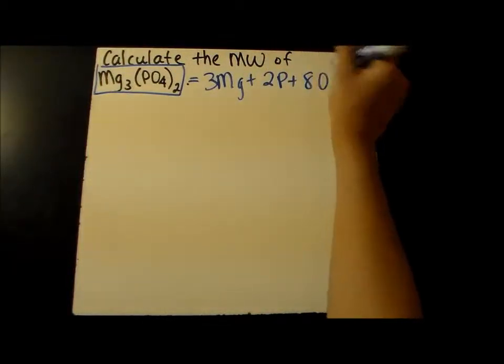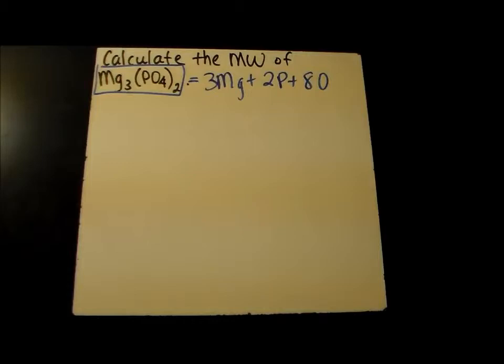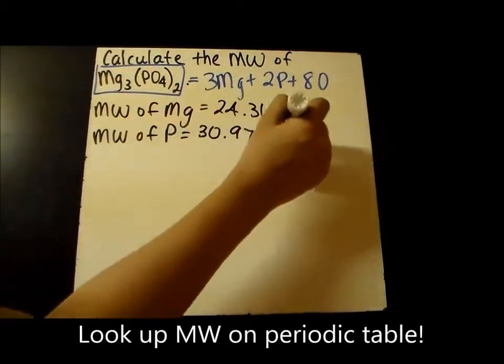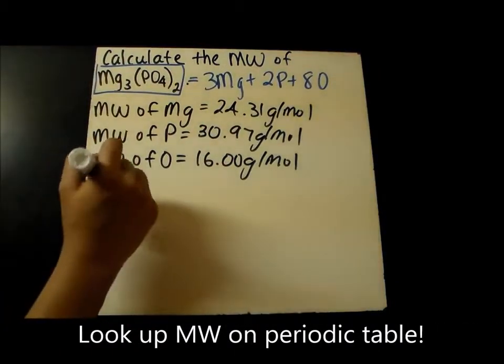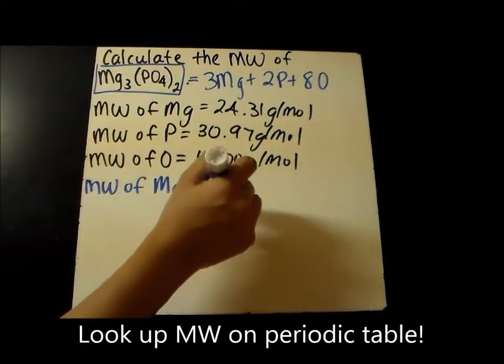So there are two phosphoruses and two times four equals eight oxygens. The molecular weight of magnesium is 24.31 grams per mole, phosphorus is 30.97 grams per mole, and oxygen is 16 grams per mole.